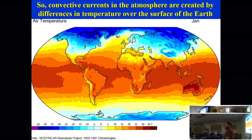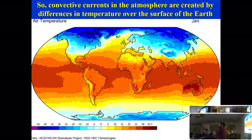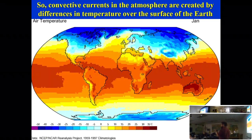Why is it colder at high latitudes? It's because the sunlight is less direct. At the poles the sun is always low on the horizon — you never see the sun directly overhead at the North Pole. Here in south Texas we're about three degrees north of the tropics, so we're subtropical and the sun will never be quite directly overhead here either.